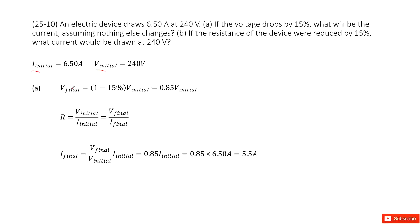So now we can consider the final voltage as 0.85 times initial voltage. Because it tells us it drops by 15%. So we write it there.